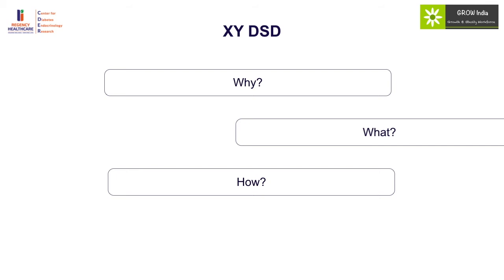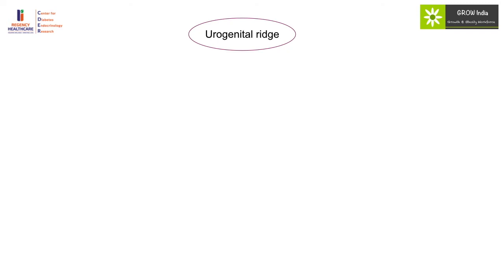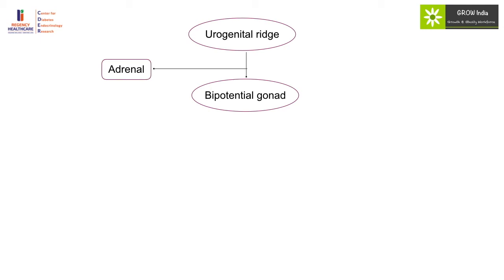Sexual development starts from the urogenital ridge, where we have development of the bi-potential gonad. From the same ridge we have development of the adrenal, in which the gene NR5A1 — previously known as steroidogenic factor 1 — plays an important role. NR5A1 is now considered an important player in the etiology of XY DSD, with roles both in gonadal development and steroidogenic function. So as a combined defect, we should think of NR5A1 as a possibility. The kidneys also develop through this process, with WT1 playing an important role — so these two genes have associated problems of adrenal and kidneys linked to bi-potential gonad development.